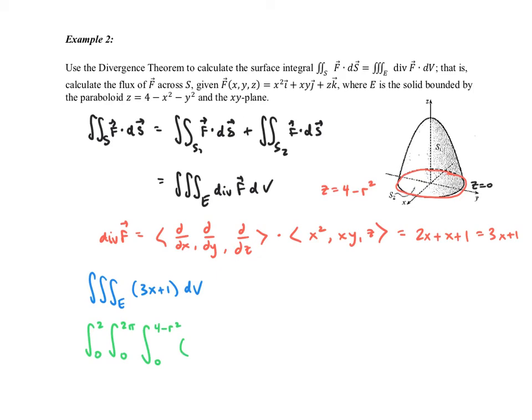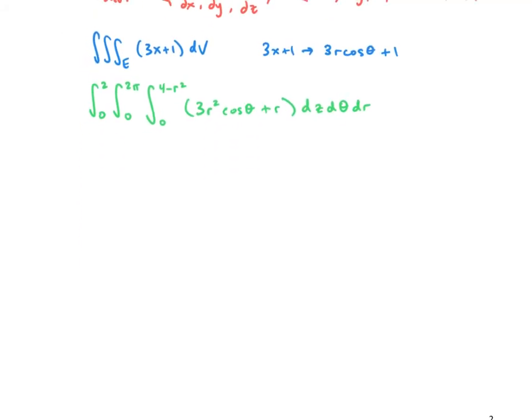The 3x plus 1 changes into 3 times r cosine theta plus 1. But remember, we've got to multiply by r because of our conversion. So we have 3r squared cosine theta plus r, and we have dz d theta dr. All of that was chapter 12.